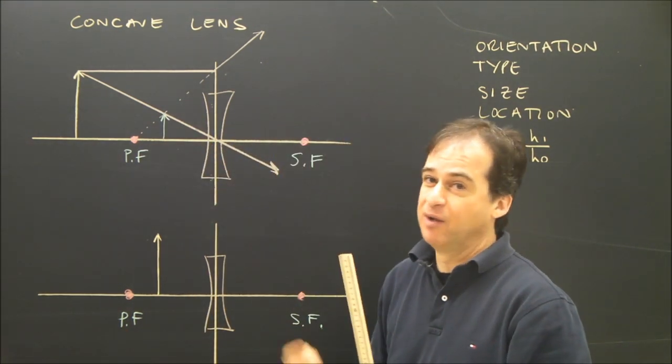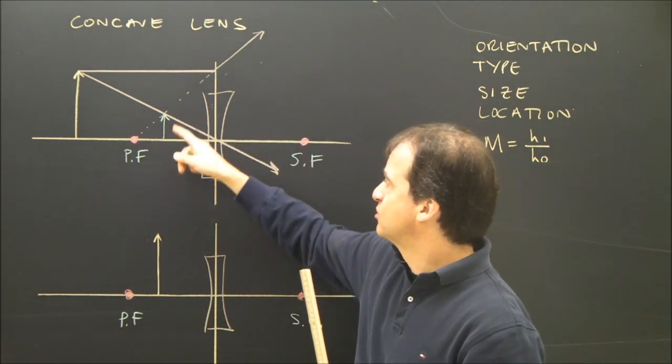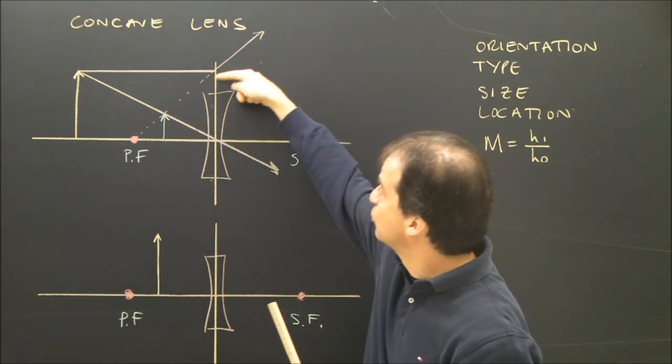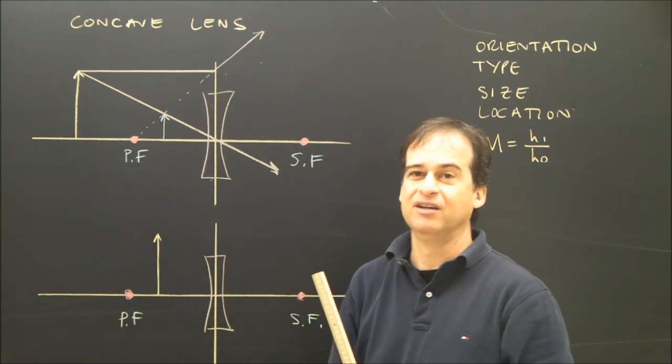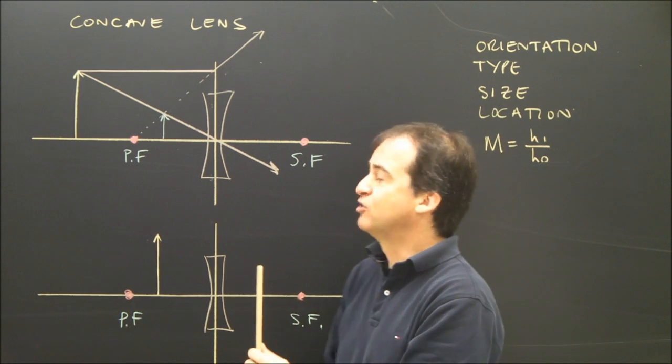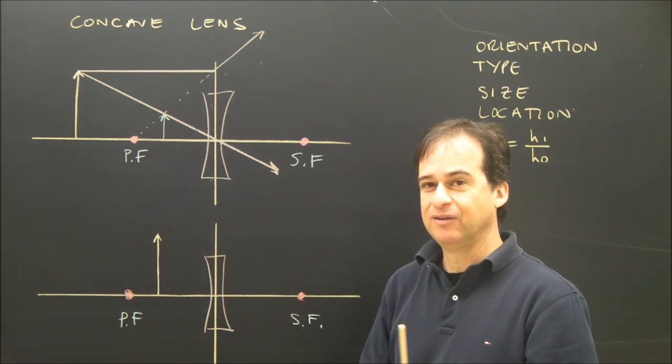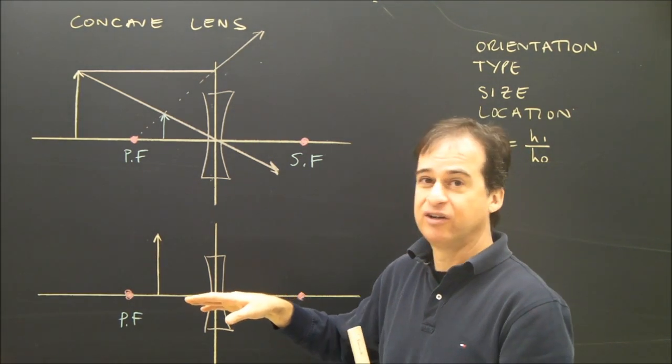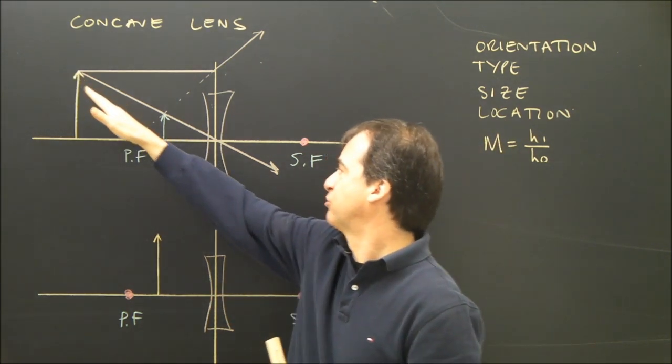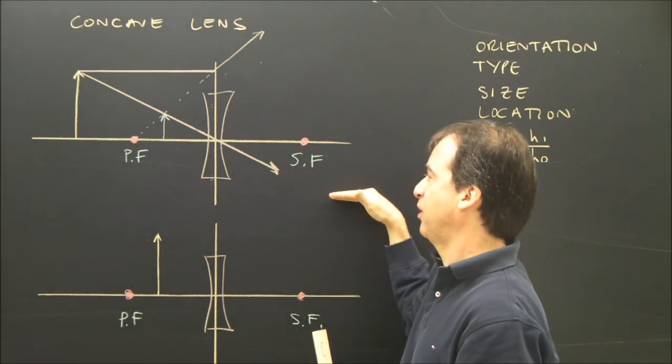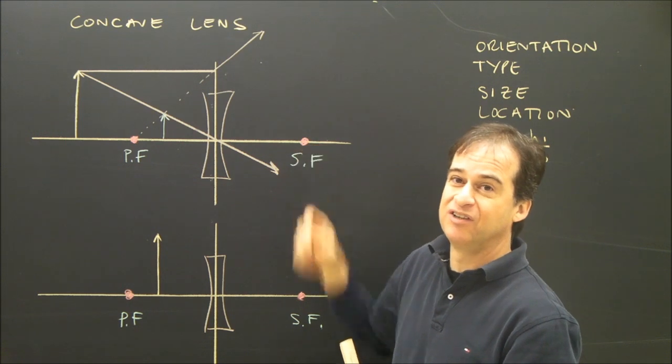Now I'm going to confirm it with the third ray, but I don't really need that. I know where it is, how big it is. I know it's virtual because I did this thing where I traced it back. The three rays didn't meet. But we're going to do that ray anyway. The third ray was for a convex diagram. It went through the secondary focus and then parallel. But the secondary focus is on this side now.